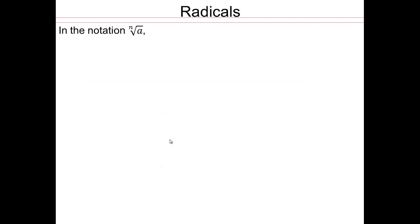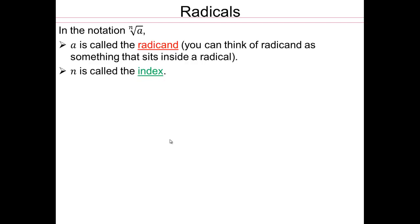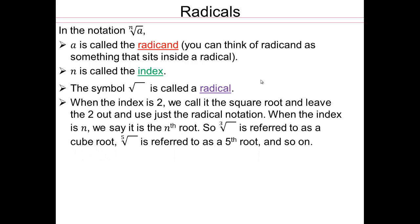All right, so in the notation nth root of a, a is called a radicand, n is called index. So this a that sits on the inside of that symbol is called radicand. This is called index. Again, just like we made sure you understood base and exponents, you want to make sure you can identify radicands and index. So that symbol is called a radical. When the index is 2, we call it square root and leave the 2 out and use just the radical notation. When the index is n, we say nth root. So that would be cube root here, can you see? So that would be cube root. This would be fifth root and so on.